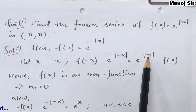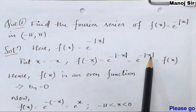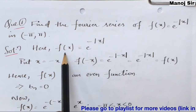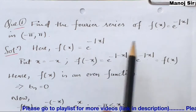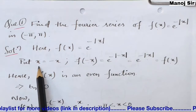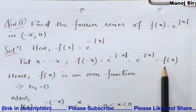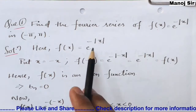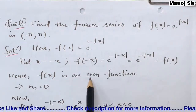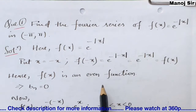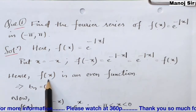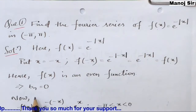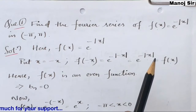Therefore f(−x) = e^(−|x|) = f(x), as given in the problem. Since f(−x) = f(x), we can say the given function f(x) = e^(−|x|) is an even function. Since the function is even, the value of bₙ will be 0.